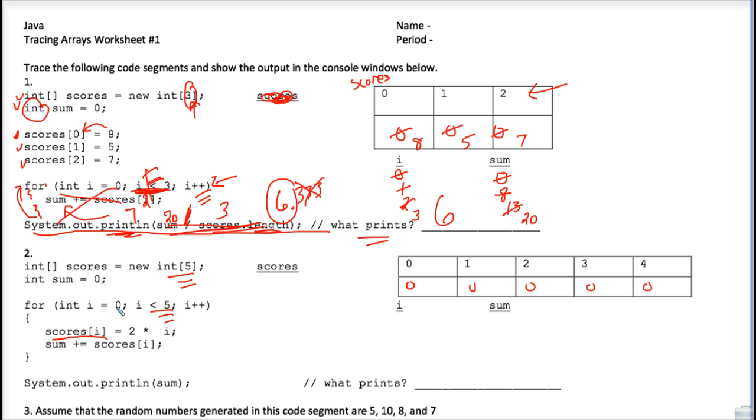And just doing this in my head, I can see that when i is 0, we're going to be putting a 0 into this position. When i is 1, we're going to be putting a 2 into this position. When i is 2, we're going to be putting a 2 into position 1. When i is 2, we are going to be putting 2 times 2. We're going to be putting a 4 into position 2.